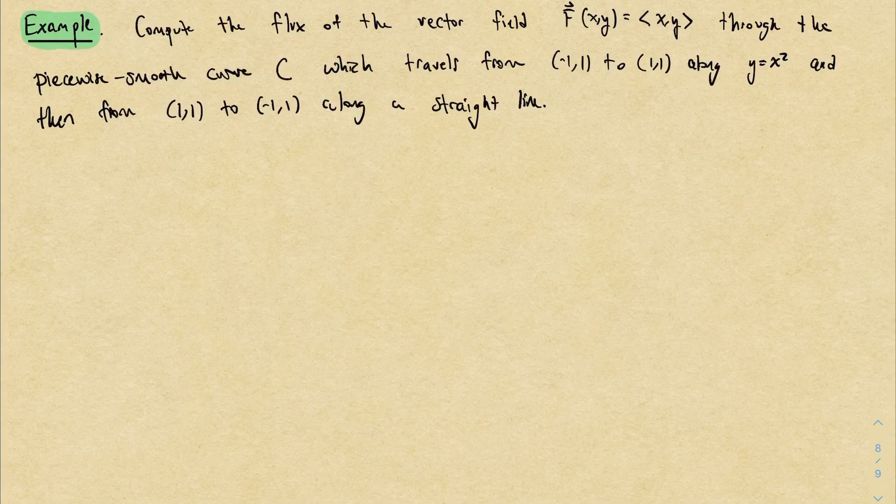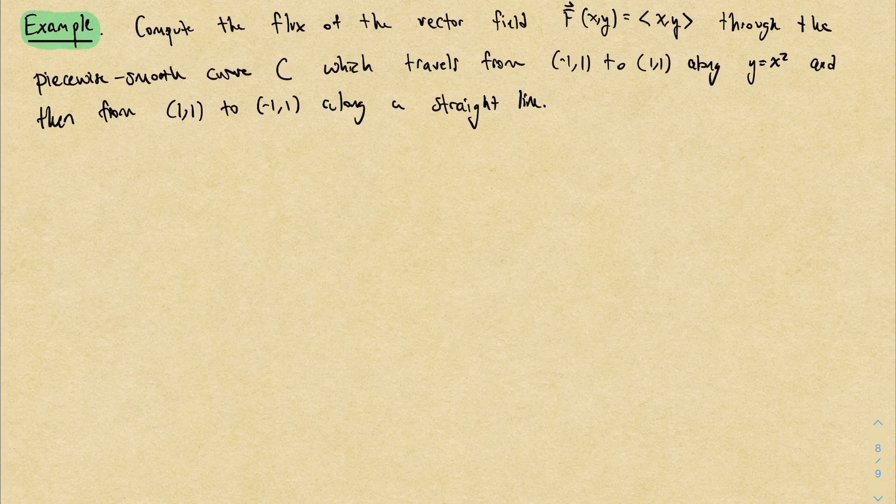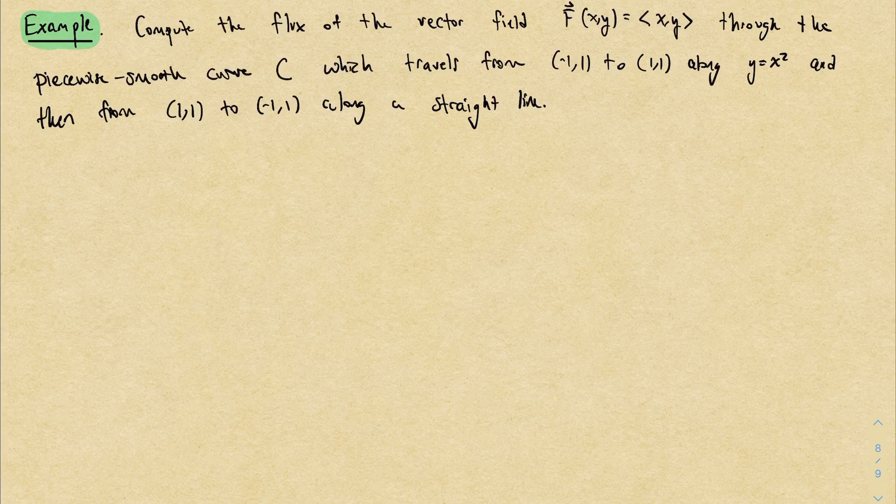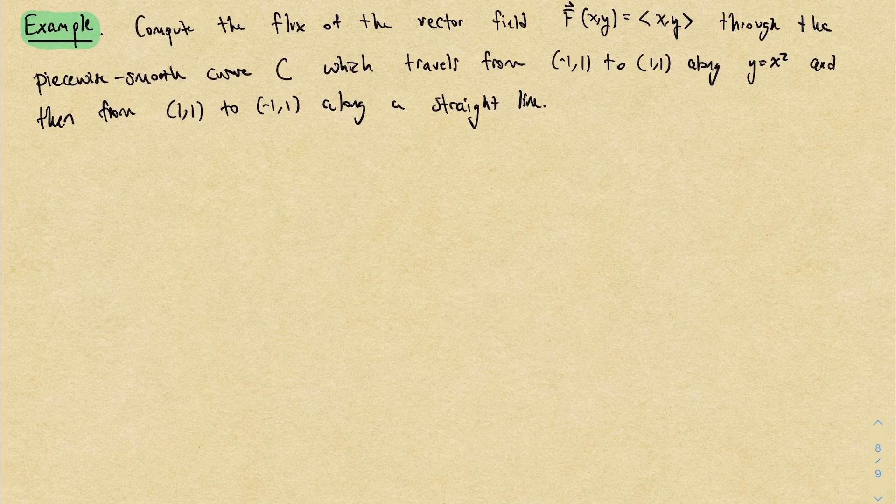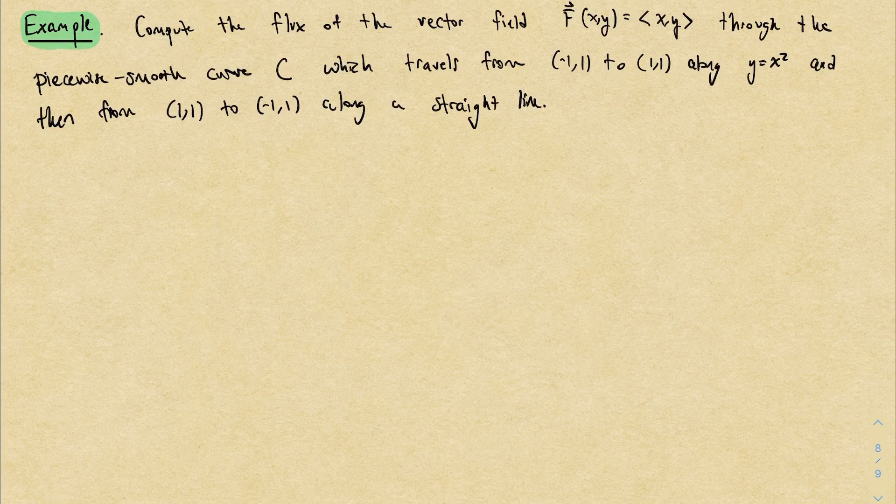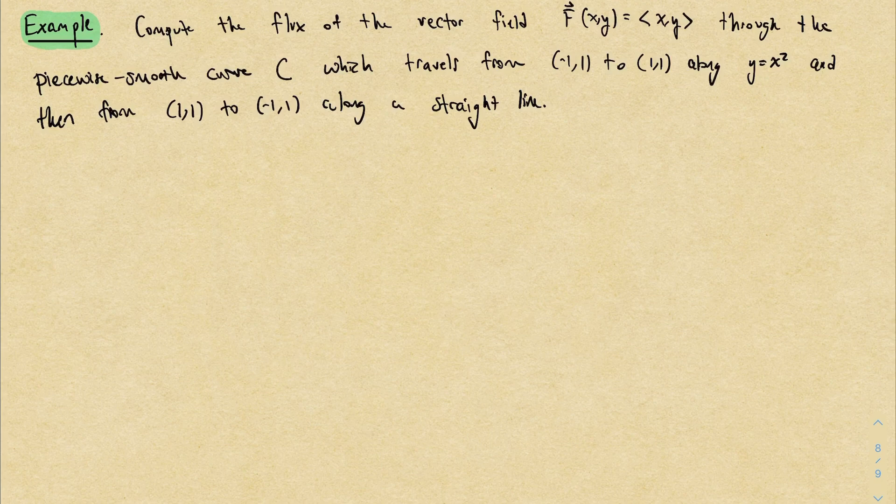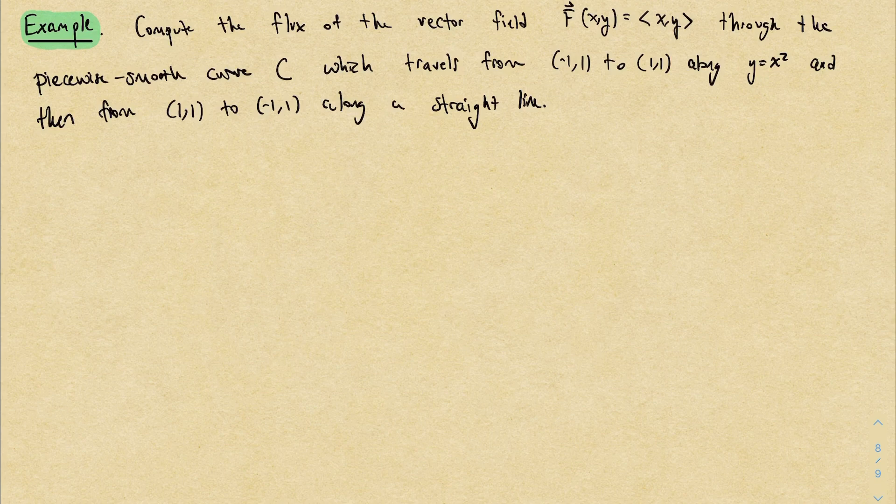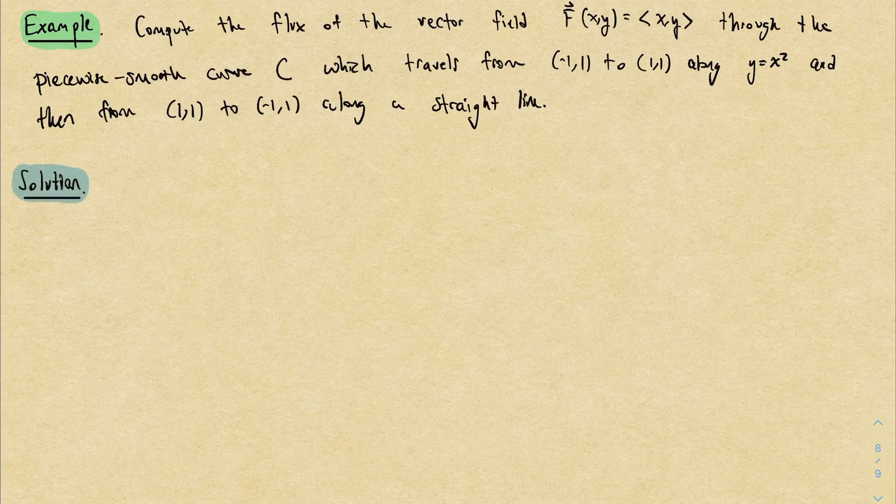Okay, let's look at an example and compute the flux through some curve. In this problem, I'm giving us a vector field (x, y). And I want to compute the flux of this vector field through the piecewise smooth curve, which is described as follows. We travel from the point (-1,1) to the point (1,1) along the curve y = x². And then from there, we travel back to the point (-1,1) just along a straight line.